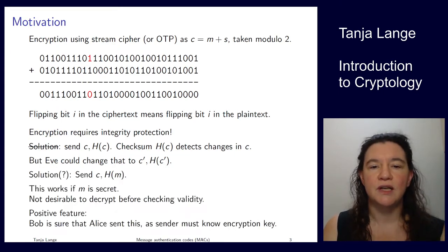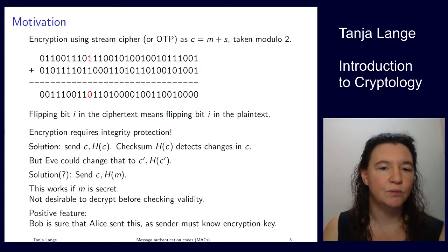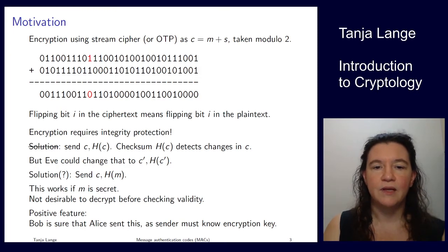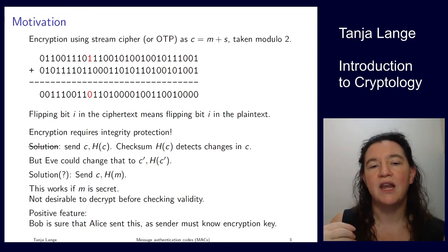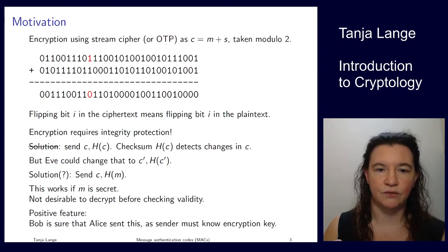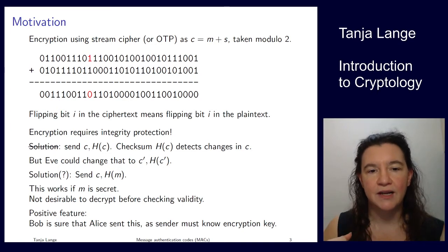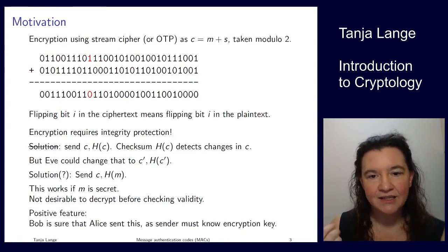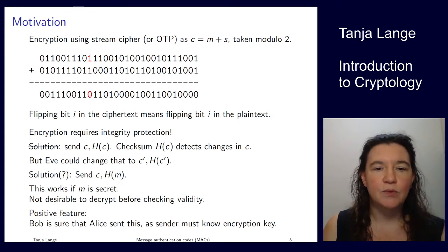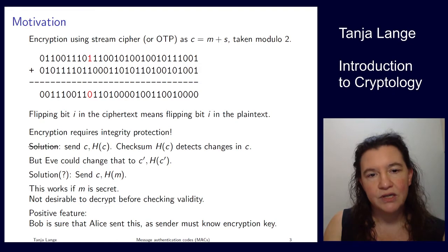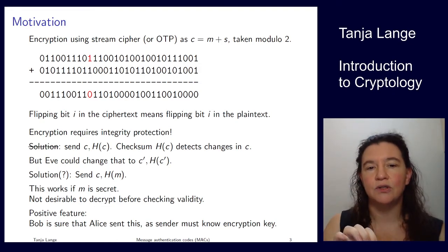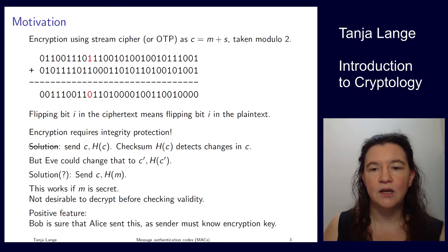A solution could be to send c along with a hash of the message. If we believe Eve doesn't have access to the message, she cannot compute the hash of the modified message. One positive feature is that it also binds Alice to this transfer, because whoever sent this knows both m and c — Bob knows it was Alice since she is the only other party who knows how to go from c to m or m to c. However, it is not desirable that Alice has to decrypt c first and only then finds out whether it is valid. We actually want to be able to check validity on the ciphertext.